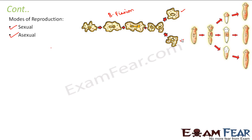In planaria, they also reproduce asexually, so only one parent is needed. The body of the parent gets divided into pieces, and each piece is capable of regenerating — giving rise to the entire organism. So only one organism gives rise to three daughter organisms. This is how planaria reproduce asexually.